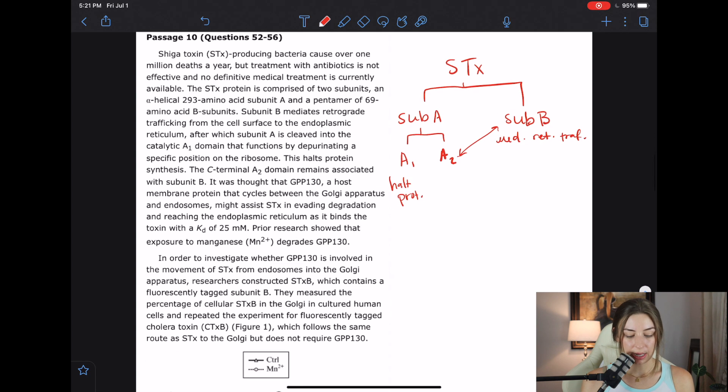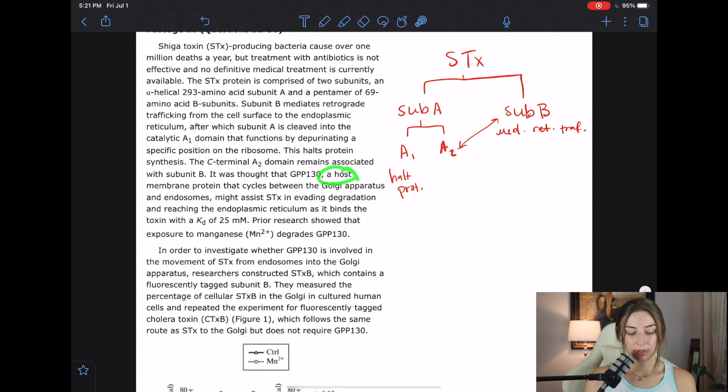It was thought that GPP-130, a host membrane protein, so now we're talking about the host protein. These were all with the Shiga toxin and with the bacteria, but now we're talking about host. A host membrane protein that cycles between the Golgi apparatus and endosomes might assist Shiga toxin in evading degradation and reaching the endoplasmic reticulum as it binds the toxin with a KD of 25 millimolar. So KD is a dissociation constant. So I'm going to write down GPP-130 binds Shiga toxin, and I'm going to put a little frowny face by GPP-130 because it kind of sounds like it is helping out the bacteria and we don't want that.